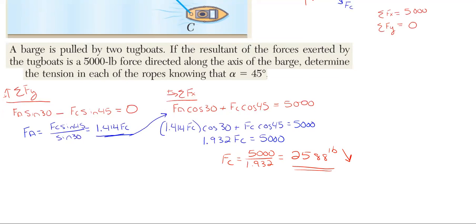Then we can take this F_C value and plug it back over here and multiply it by 1.414, and then we can get F_A.